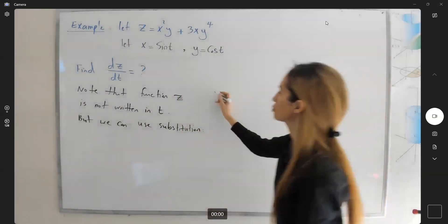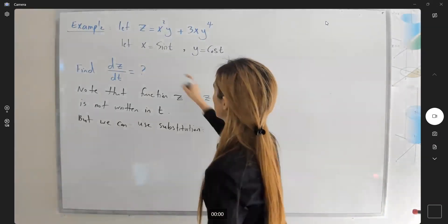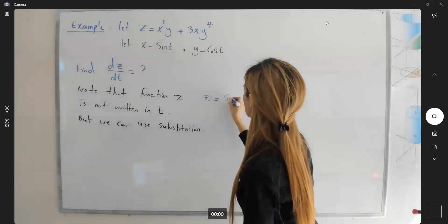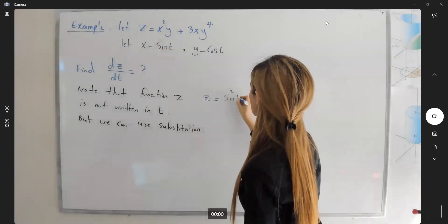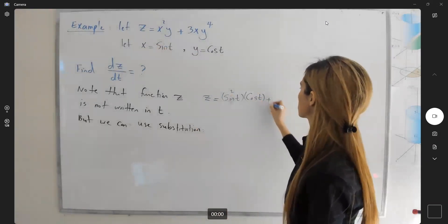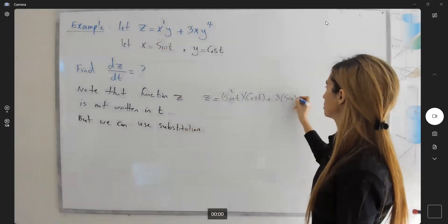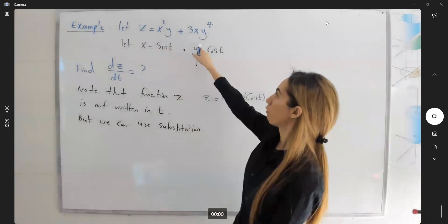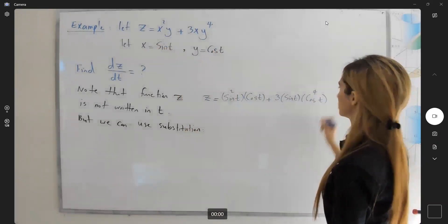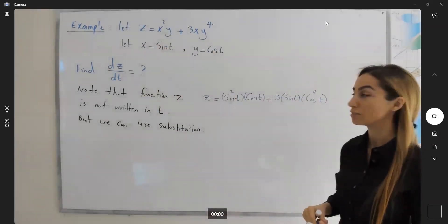If you use substitution, z becomes: wherever I see x, I substitute sine t. So it becomes sine squared of t times y, which is cosine t, plus three times sine t times y to the fourth, which is cosine to the fourth of t. Now my function is written in t, and I can easily find the derivative with respect to t.